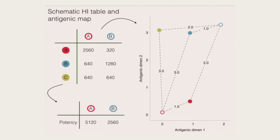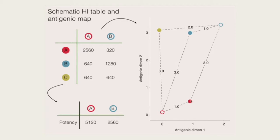In a bit more detail: say we have red, blue, and yellow virus, and sera raised against red virus and sera raised against blue virus. The titer is high from A versus A and drops from A to B and A to C. So there's one unit of distance from the sera from A to virus A, and three units of distance to virus B and virus C. Each unit is equivalent to a drop in titer. You can see on the map that sera from A and virus A are close to each other, and sera from B and virus B are close to each other.